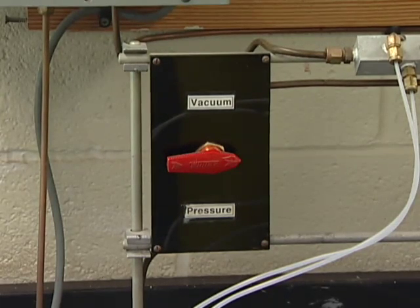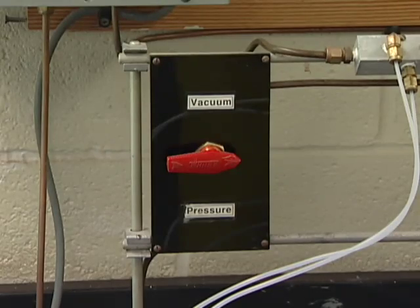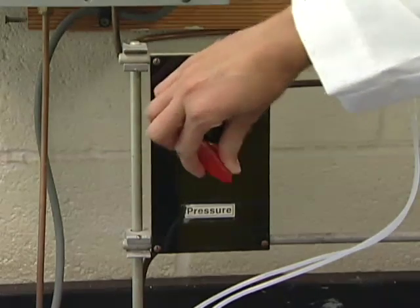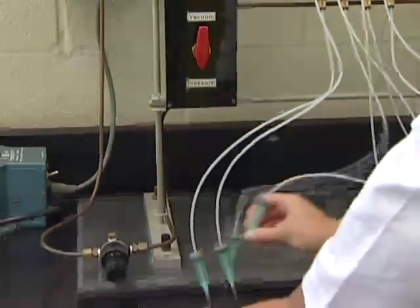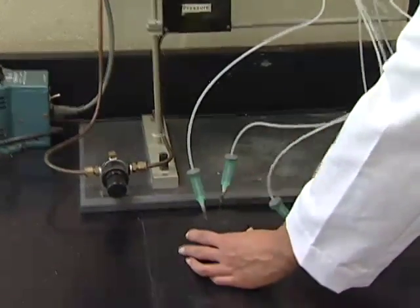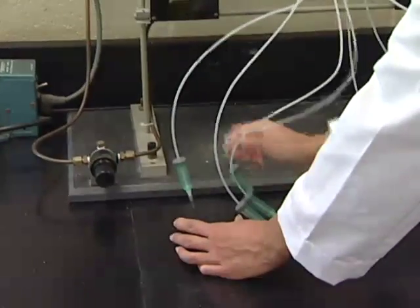To start up the pressurizing gassing station, turn the three-way valve to pressure and remove the gassing line needles from the large rubber stoppers. This is done to flush out the gassing lines.